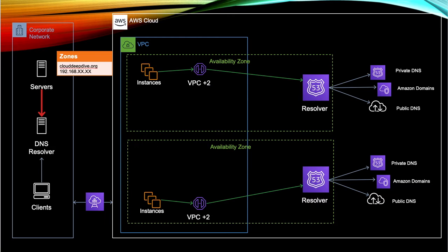Let's take a hybrid environment where you have a corporate network and you have AWS Cloud. Many organizations are doing this — they maintain hybrid setups until they move completely to AWS Cloud. Your corporate network is connected with AWS Cloud via a Direct Connect or maybe a site-to-site VPN connection. If any server in your corporate network needs to resolve a DNS name, it goes to the DNS resolver, which has all the zone files. Anything belonging to your corporate network will be resolved by your DNS resolver.